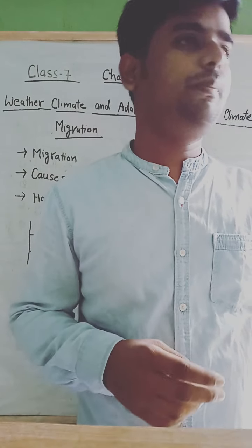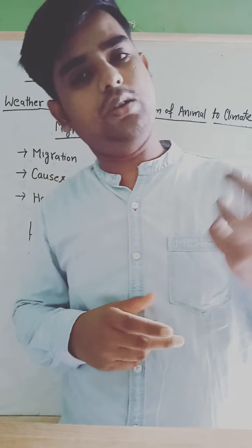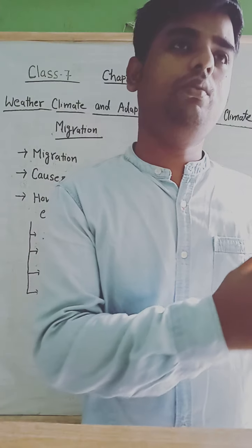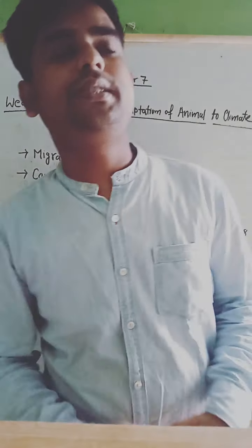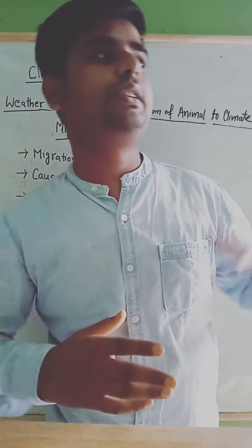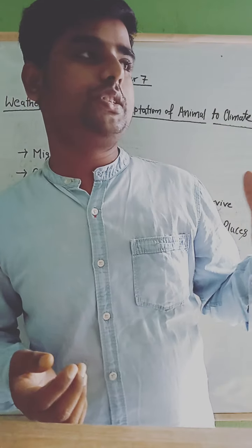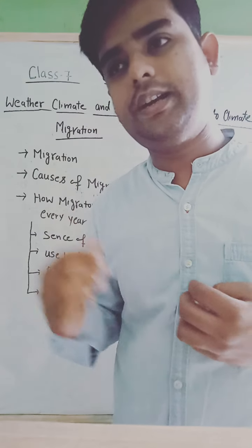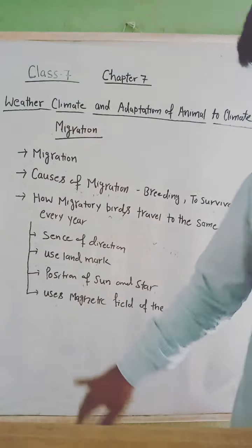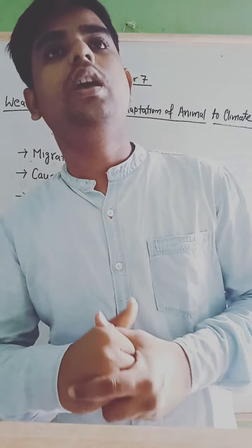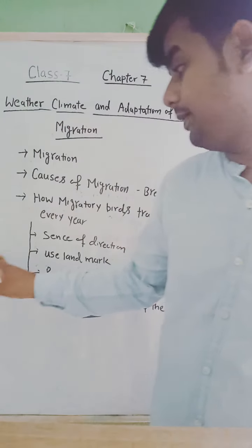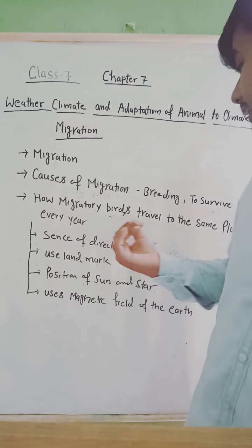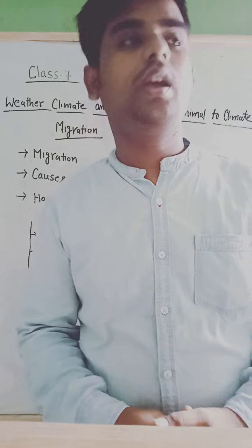They use landmarks and stars to navigate to the same places. Next, they use the magnetic fields of the earth. The magnetic fields of the earth help them determine in which direction they need to go. So there are four steps by which migratory birds travel to the same places every year.